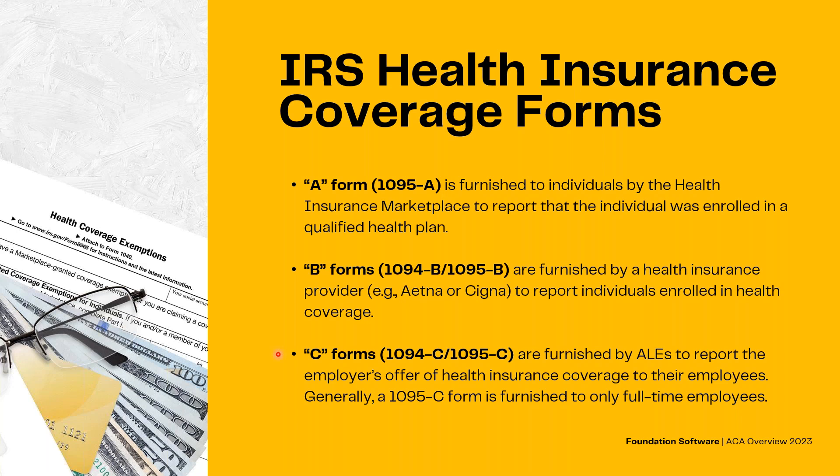And then the C forms are furnished by ALEs to report the employer's offer of health insurance coverage to their employees. Generally, a 1095-C form is furnished only to full-time employees. As a side note for the B form, if a small employer is self-insured — meaning they self-insure, self-fund, and self-administer their health insurance — they can use the B form to report the individuals that enrolled in their self-insured coverage.